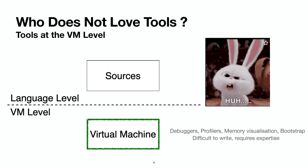In the case of Pharo, the debugger is actually coded at the language level, so we don't really need the virtual machine to do that. Therefore, at the virtual machine level, we only have two tools: one debugger for the JIT compiler — a VM developer level concern — and a bootstrap to create the meta-object protocol of Pharo. Basically, tools that do not really interest Pharo developers.